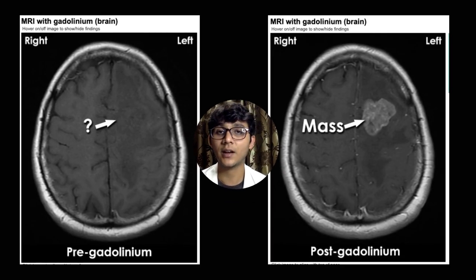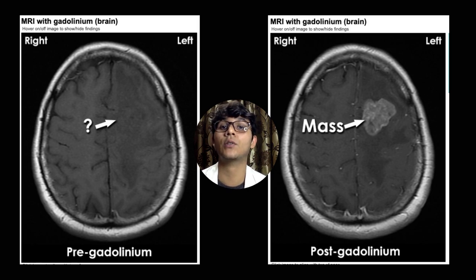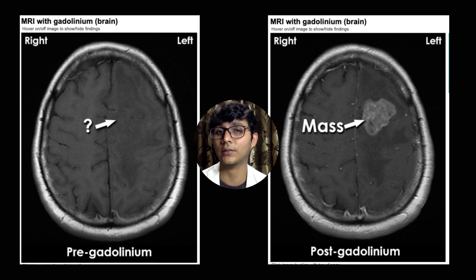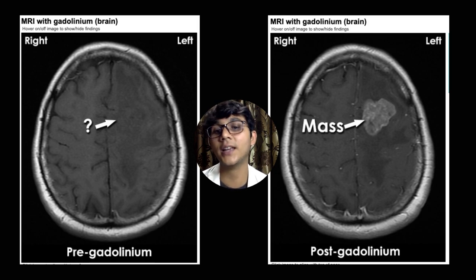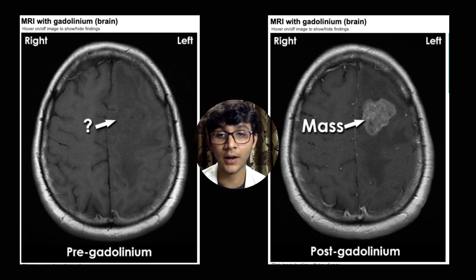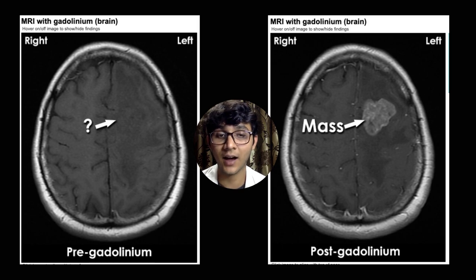All previous MRI slides discussed were non-contrast-based, yet we extracted significant detail about pathologies. We can also use contrast in MRI to delineate structures like tumors, abscesses, inflammatory infiltrates, and disruptions in the blood-brain barrier. For example, in this image, the left scan is pre-gadolinium. After introducing gadolinium, a mass becomes visible around a hypodense structure on the left side — useful for identifying pathologies at the interface of the blood-brain barrier and brain tissue.